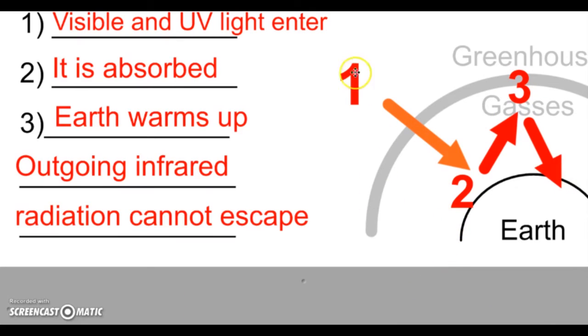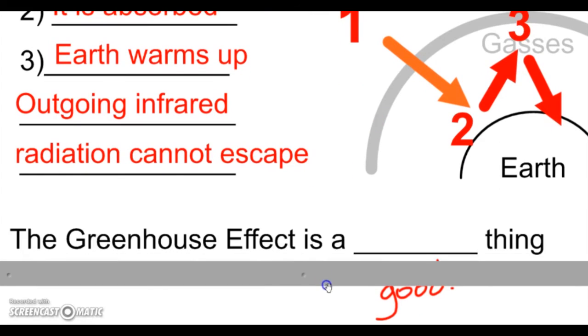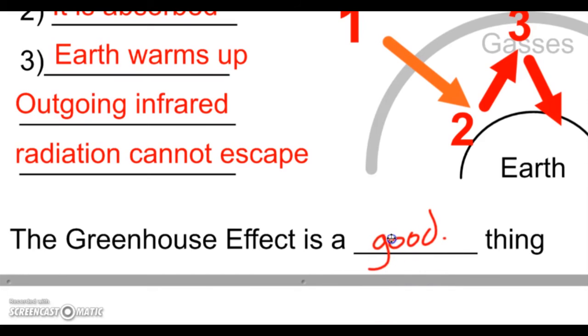Now if there were no greenhouse gases, if there were zero, none, the Earth would be about negative 60 degrees Fahrenheit. It would be very, very, very cold. Because of that, the greenhouse effect is a good thing. So that's one thing we need to remember: the greenhouse effect in itself is a good thing.